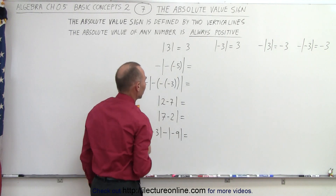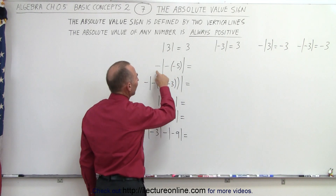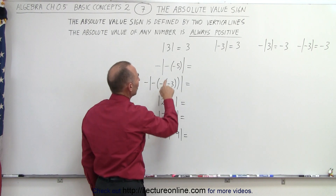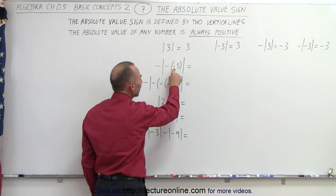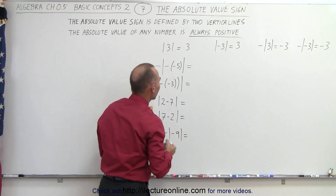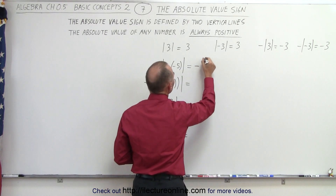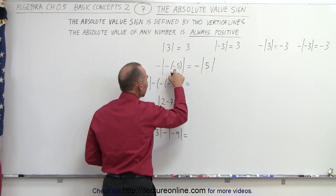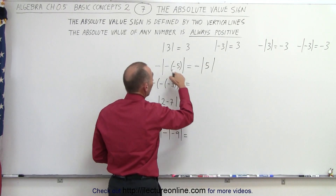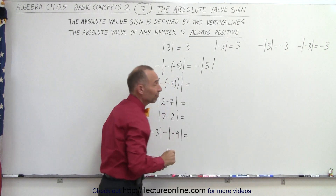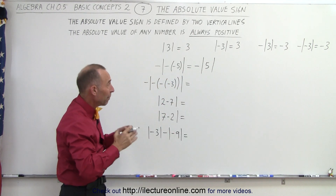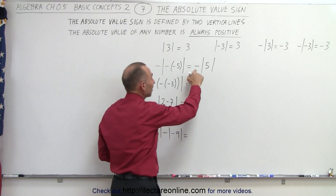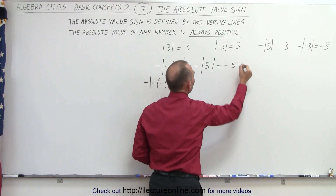So here we have some example exercises. For this one, a negative times a negative number gives a positive 5. So this cannot be written as a negative of the absolute value of a positive 5, because a negative times a negative gives a positive. The absolute value of positive 5 is indeed positive 5, but because of the negative sign in front of it, this is equal to negative 5.